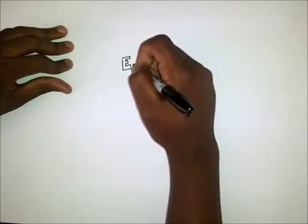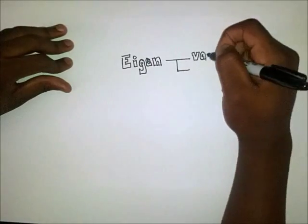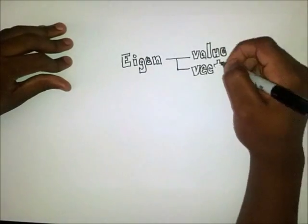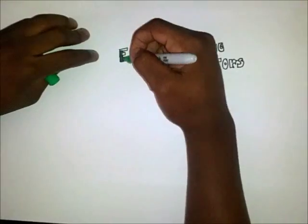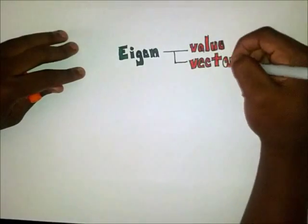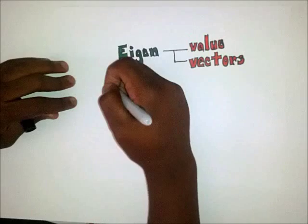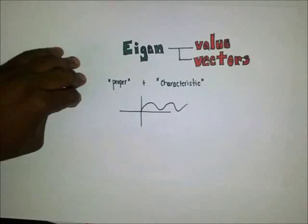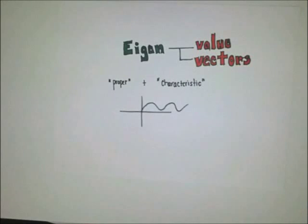First, let's start off with a little background. The words eigenvalue and eigenvector obviously have something in common and that's the word eigen. Turns out that it's German and it loosely translates to proper or characteristic.